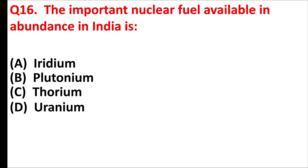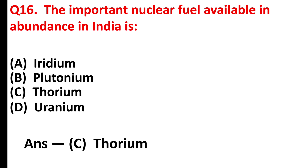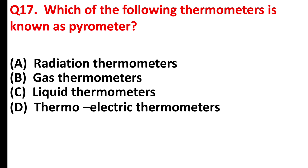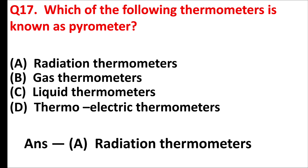The important nuclear fuel available in abundance in India is — answer is option C: thorium. Which of the following thermometers is known as a pyrometer? Answer is option A: radiation thermometer.